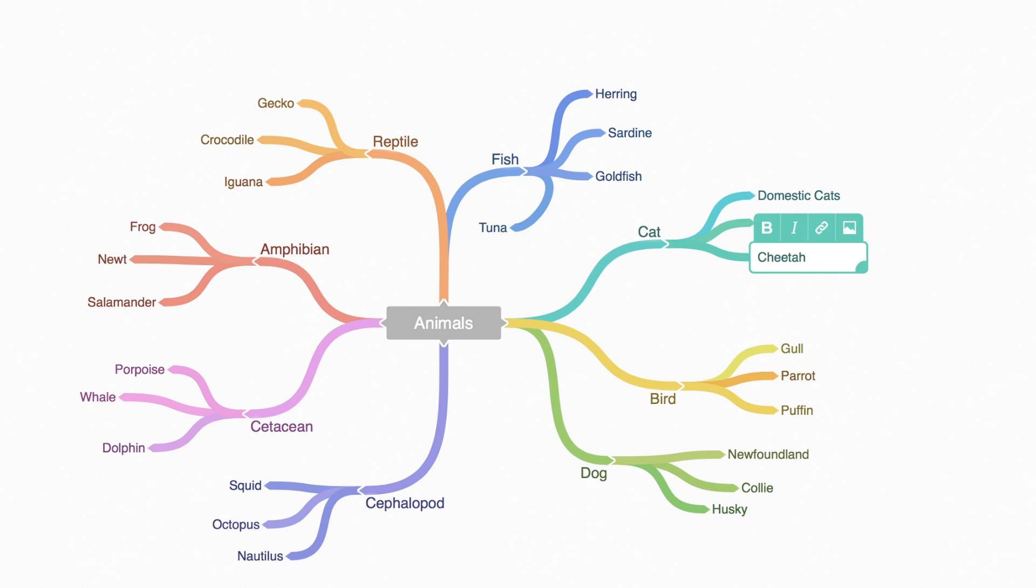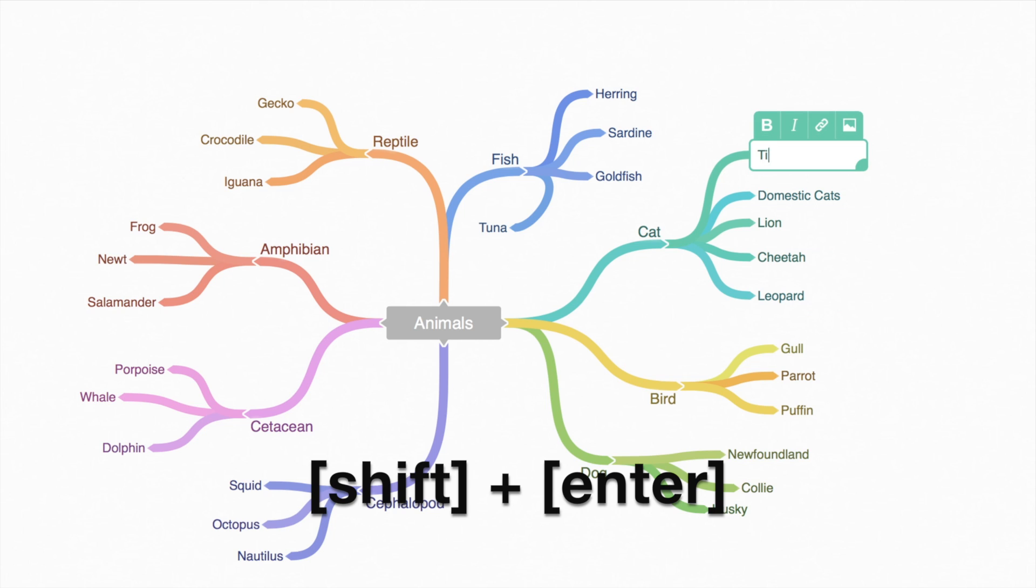To create another item at the same level, use Shift-Enter. This is a great way to add lots of items quickly.